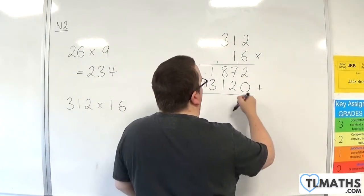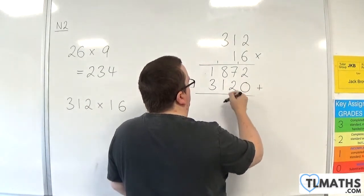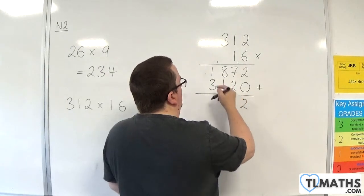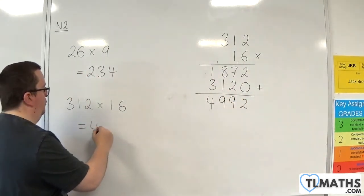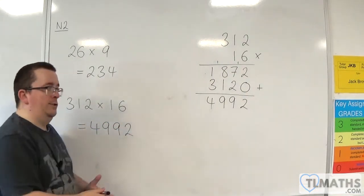2 plus 0 is 2. 7 plus 2 is 9. 8 plus 1 is 9. 1 plus 3 is 4. So the answer is 4,992.